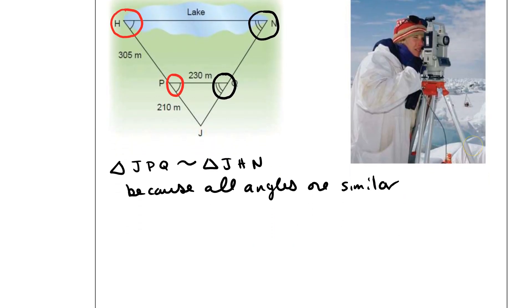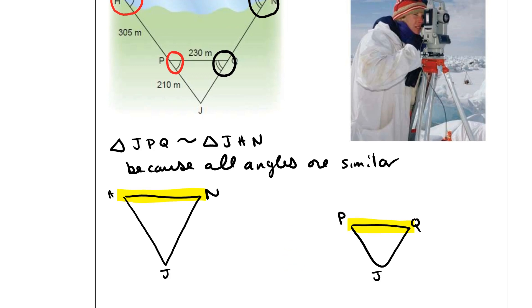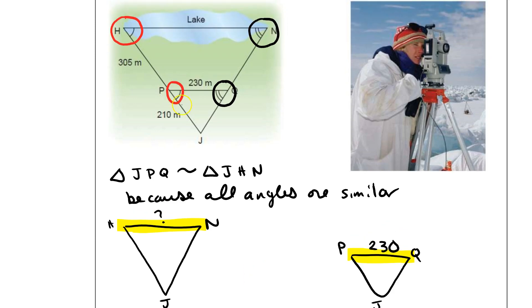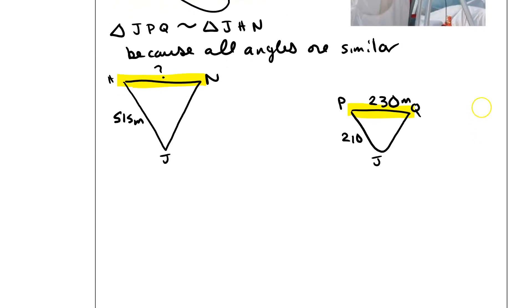Since I know that, let's draw out both of these triangles here. I have the larger one, JHN. I have the smaller one here, JPQ. What I want to do is find out what this HN is. That means for the corresponding side to that, I'm going to use the information that I know about P and Q. I know that this one right here is going to be 230. This length here for PJ is going to be 210. We have to do some adding here because we have 210 plus 305. If we go 210 plus 305, that's going to be 515 meters.